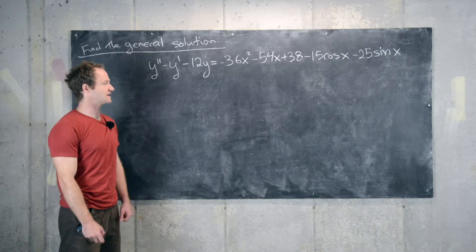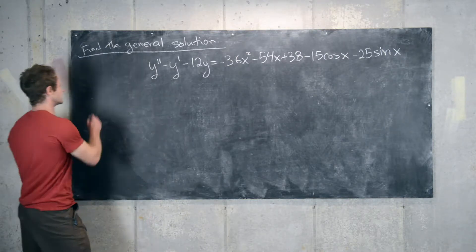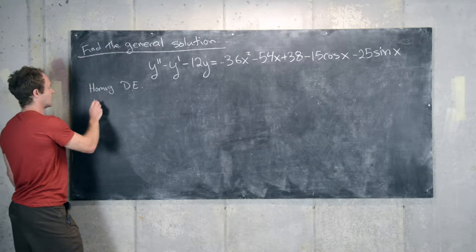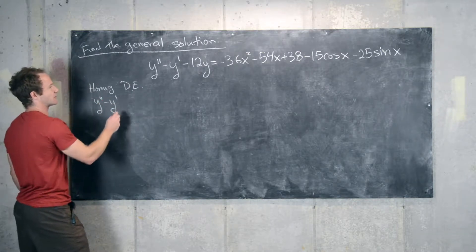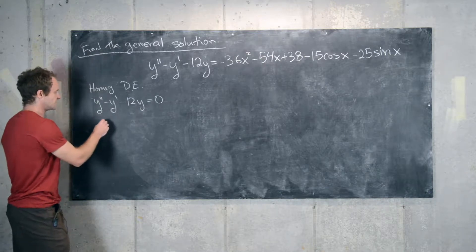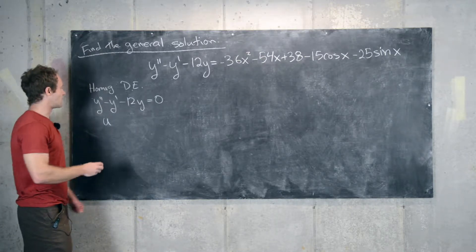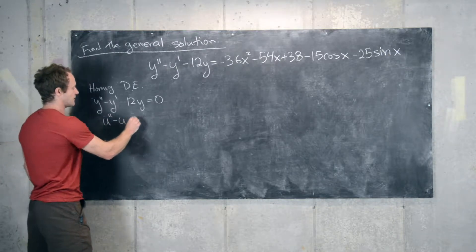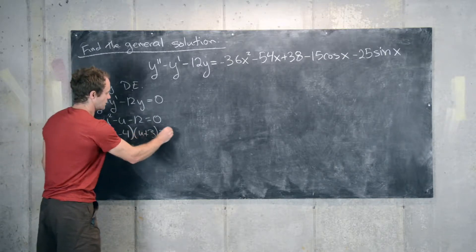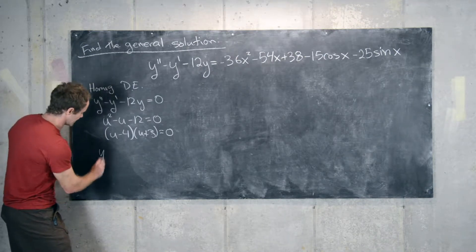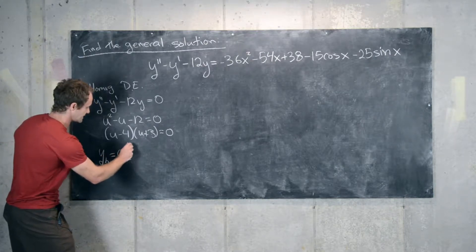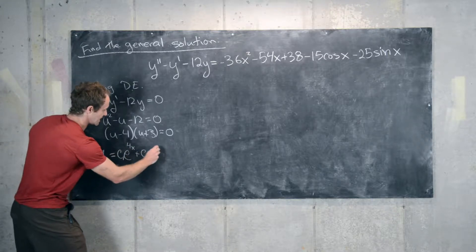The first thing we want to do is find the solution to the corresponding homogeneous differential equation. So we solve y double prime minus y prime minus 12y equals 0. We look at its related polynomial: u squared minus u minus 12 equals 0, which factors into (u minus 4)(u plus 3) equals 0.